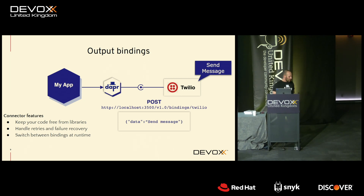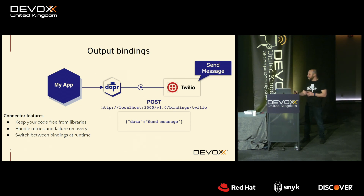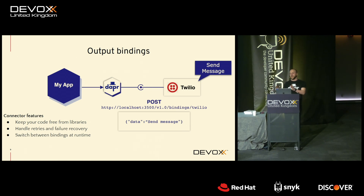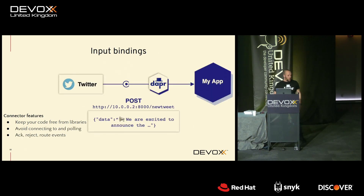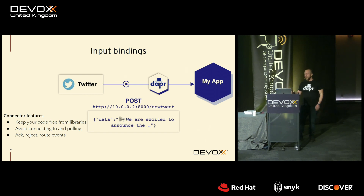The third API is bindings — basically connectors to external systems. They can be output bindings going to an external system or input bindings receiving messages from an external system. For example, an app sending a message via Twilio: rather than calling the Twilio API directly, you interact with the DAPR sidecar and get out-of-the-box resiliency and observability. The more interesting case is the input binding — rather than starting a separate thread to poll an external endpoint, DAPR does the polling. DAPR polls the Twitter API, and when a tweet matches your criteria, it forwards it to your application. Your application simply acknowledges or rejects the request for DAPR to process further.